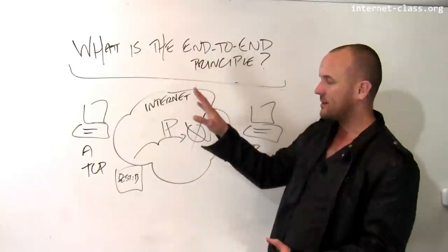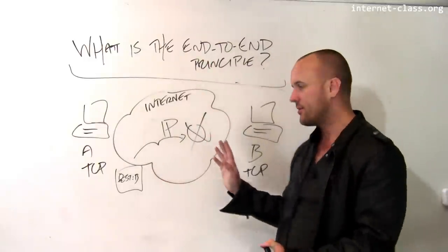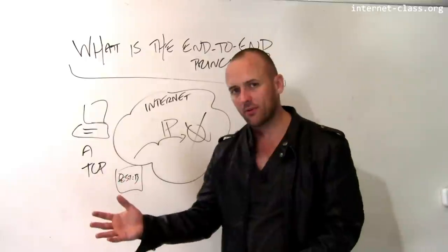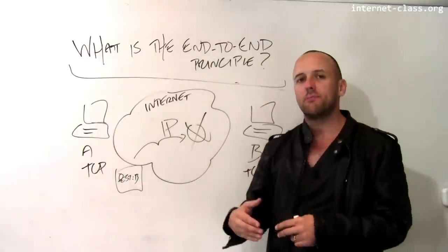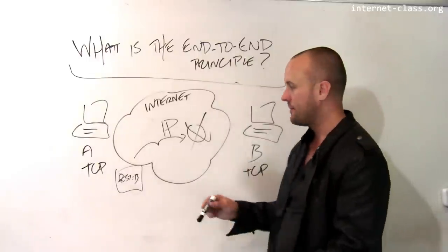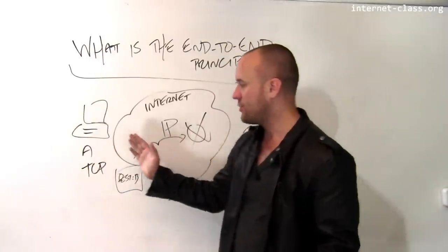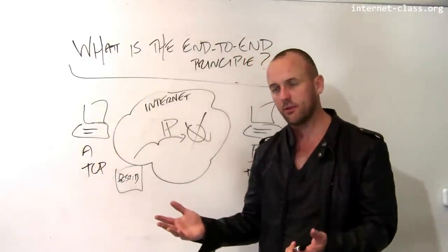And the other thing that's really neat about the end-to-end principle is that it allows a lot of innovation to go on at the endpoints. So by keeping the core network simple, it's also not doing more than you need. And it also means, for example, let's say I want to experiment with a new way of transmitting data back and forth between these two computers.